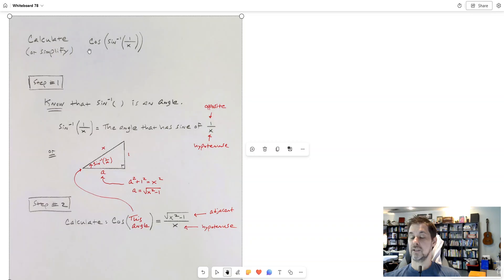So cosine of sine inverse 1 over x is cosine of this angle right here is root x squared minus 1 over x.